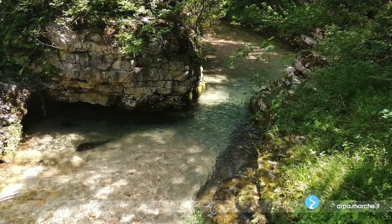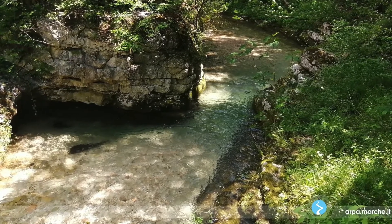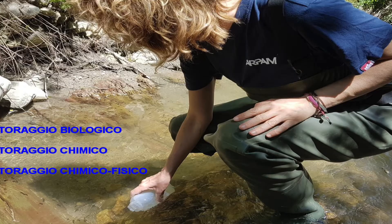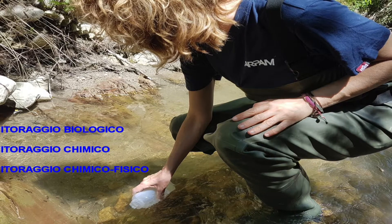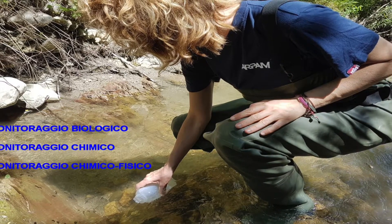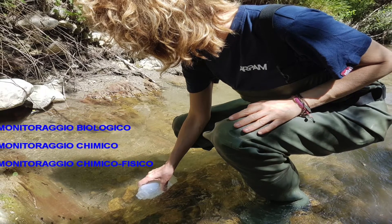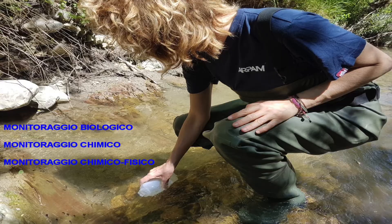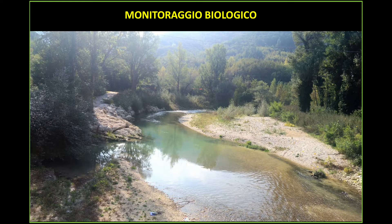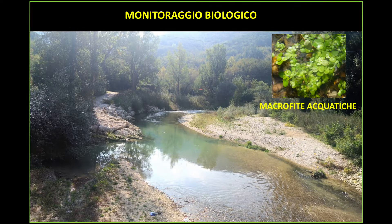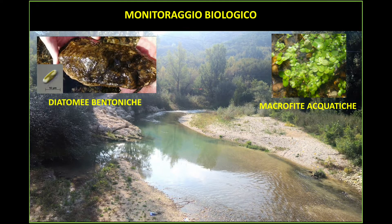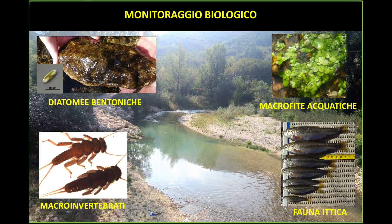Per ottenere più informazioni possibili sulla realtà del fiume, i diversi metodi di indagine vanno utilizzati insieme. ARPA Marche si occupa del monitoraggio biologico, chimico e chimico-fisico dei corpi idrici fluviali, finalizzati a definire lo stato di qualità, cioè lo stato di salute dei nostri fiumi. Le diverse comunità viventi studiate per il monitoraggio biologico comprendono quelle dei vari livelli trofici della catena alimentare fluviale: per gli organismi vegetali si studiano le piante acquatiche, le cosiddette macrofite acquatiche, e le alghe bentoniche del perifiton, quelle di diatomee, mentre per gli organismi animali i macroinvertebrati e i pesci.